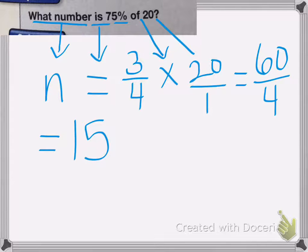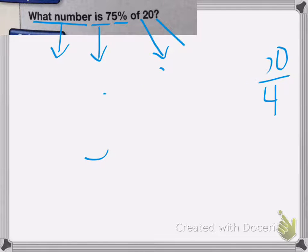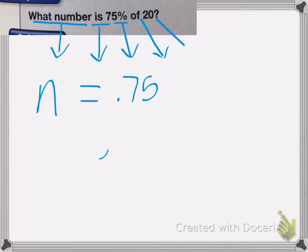Now we can also do this using a decimal number. So let's rewrite it using a decimal. So we'd have what number again is equal.